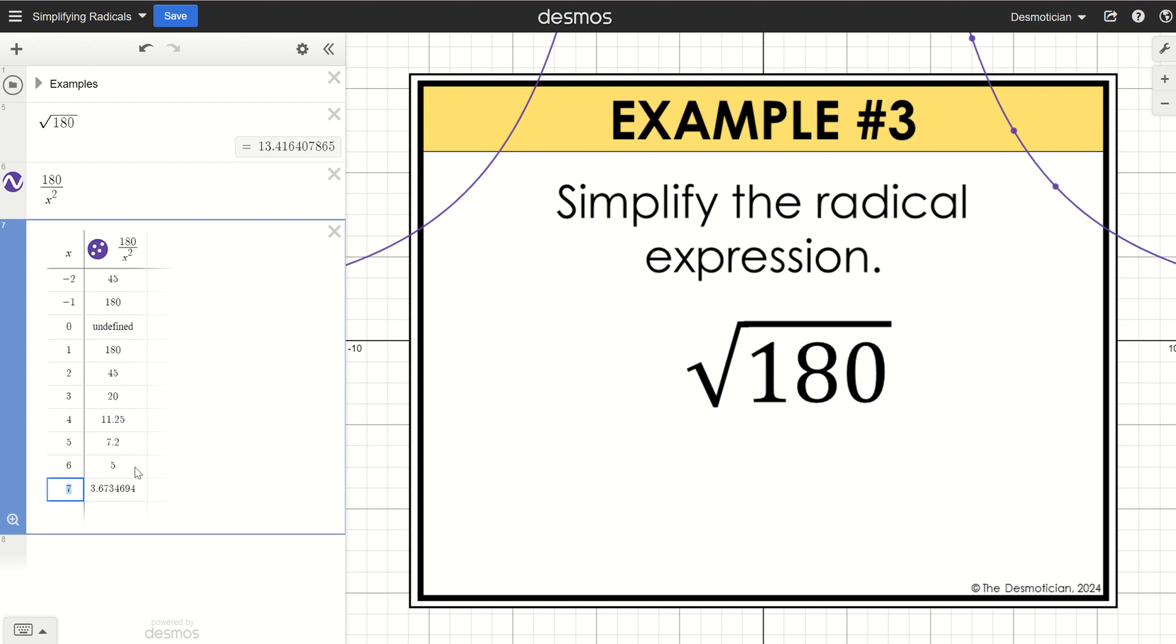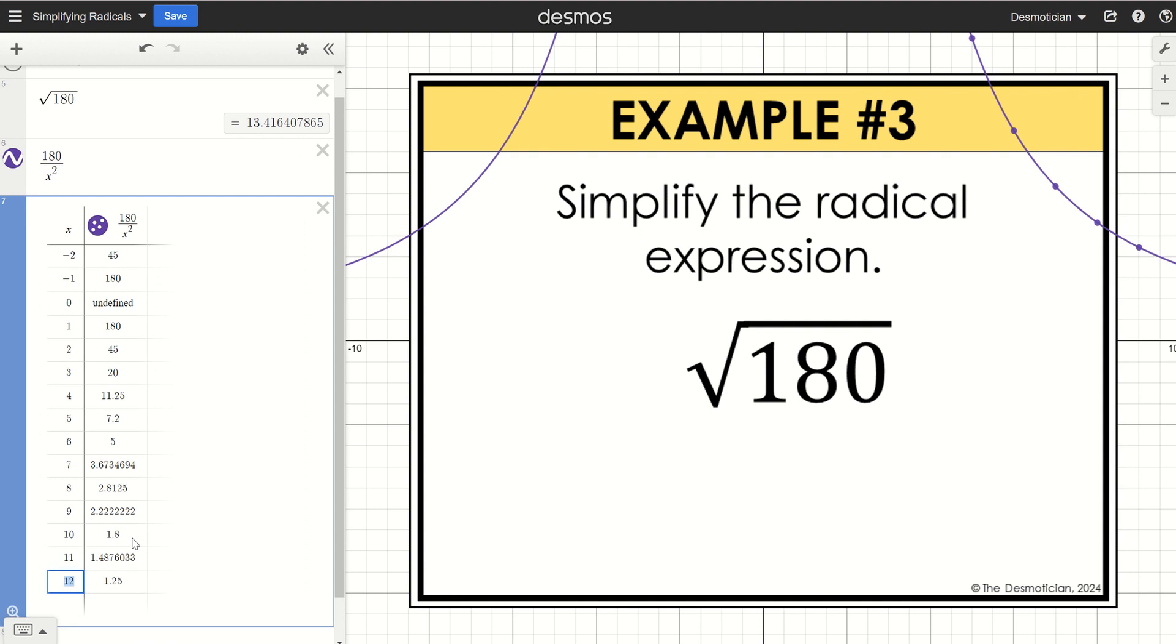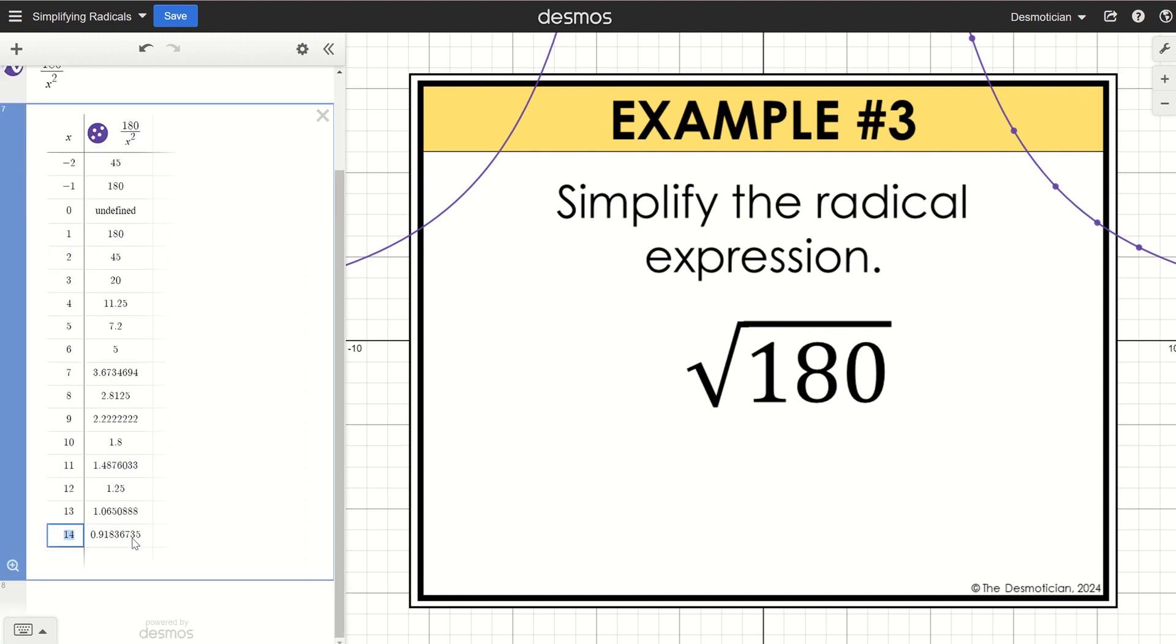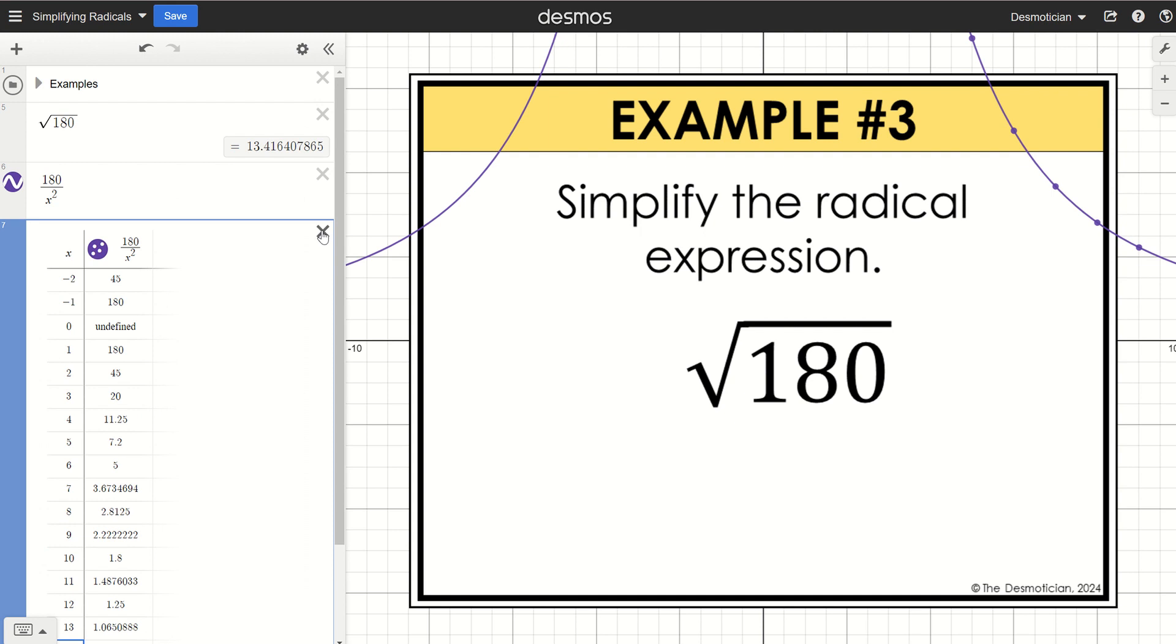6 times the square root of 5. I'm looking to see if I see any other integers here. And I do not. So 6 times the square root of 5 is my answer.